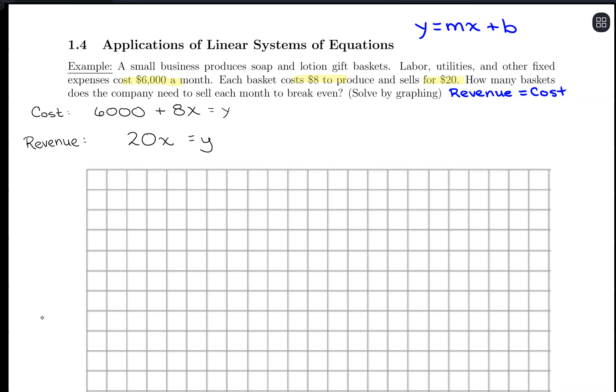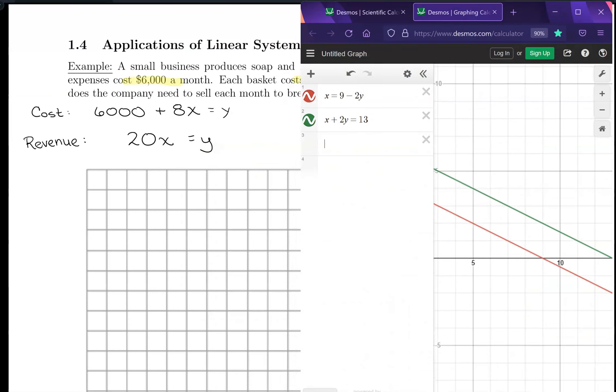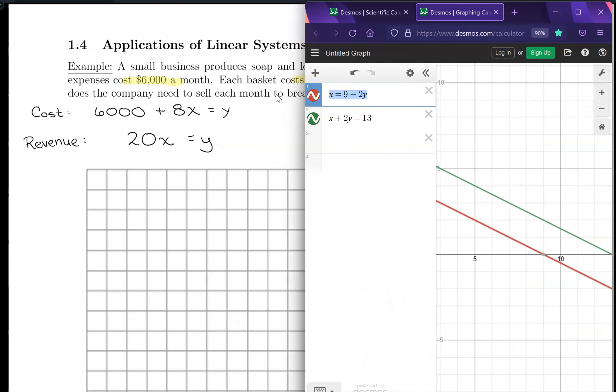I know I have the grid down here, but let's jump over to Desmos. Because what we can do is we can use technology to help ourselves out. These equations are pretty complicated. So with that, let's use technology. So my Desmos graphing calculator, we're taking y equals 6,000 plus 8x. And then for revenue, we're taking y equals 20x.